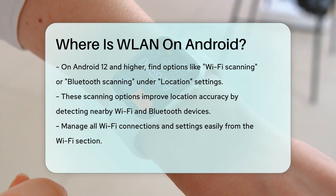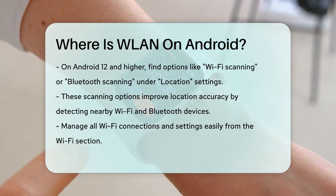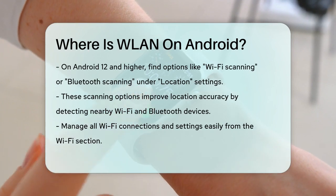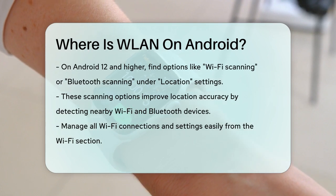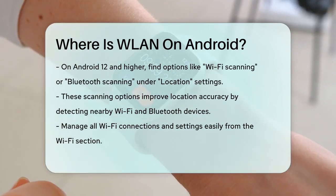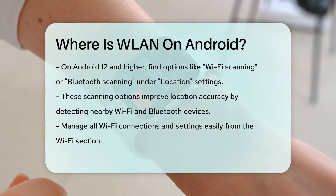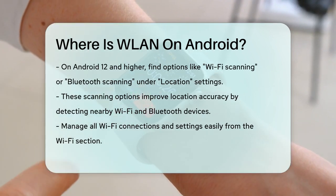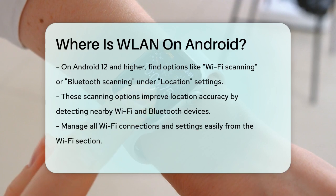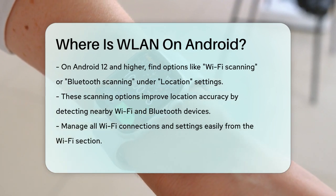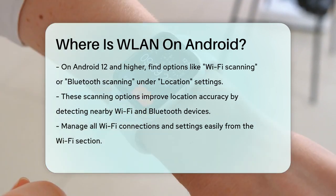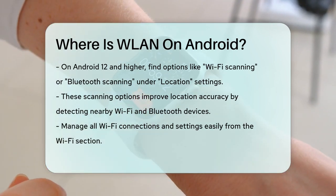To summarize, to find and manage your WLAN settings on Android, go to Settings, then Network and Internet, or Connections, and finally to the Wi-Fi section. Here you can manage all your Wi-Fi connections and settings with ease.